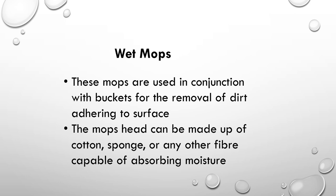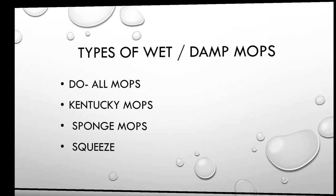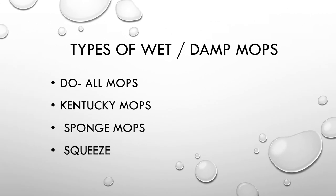The next manual equipment is wet mops, also known as moist mops, used as the second step in the cleaning of a surface. The wet mop is swept over the surface to dissolve and absorb fat, mud, and dried liquid contamination. The types of wet or damp mops used in hotels are: do-all mops, Kentucky mops, sponge mops, and squeezy.